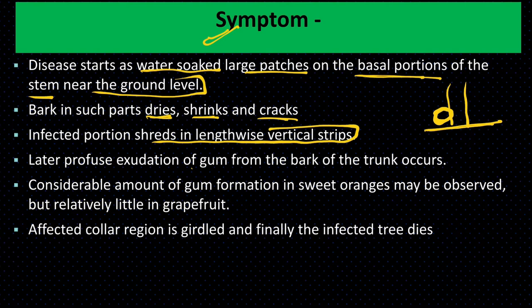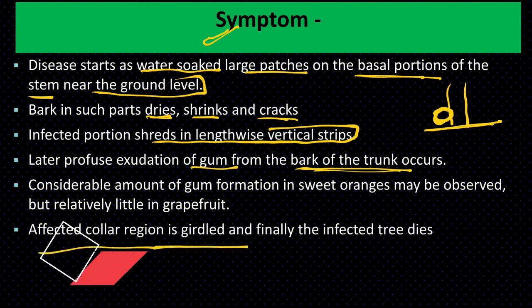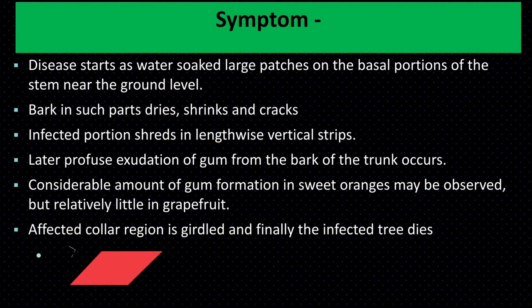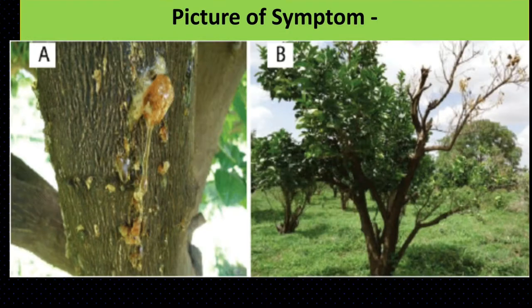Later, there is profuse exudation of gum from the bark of the trunk. The affected region is girdled, and finally the infected tree dies. This is the symptom starting near the soil level of the stem.